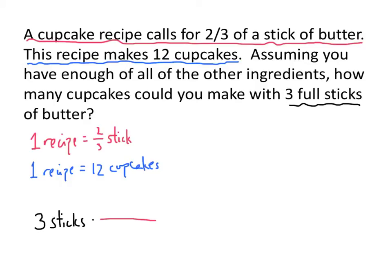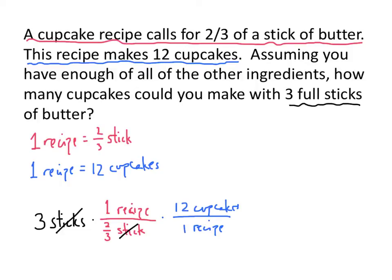We have sticks and we want recipes, so we're going to put recipes on the top — one recipe — and the sticks go on the bottom, so two-thirds of a stick goes on the bottom. That gives us recipes because the sticks divide out. Now we want to go from recipes to cupcakes, so we use our second conversion factor: recipes go on the bottom and cupcakes go on the top — 12 cupcakes on top and one recipe on the bottom. Our units divide out and we end up with cupcakes.